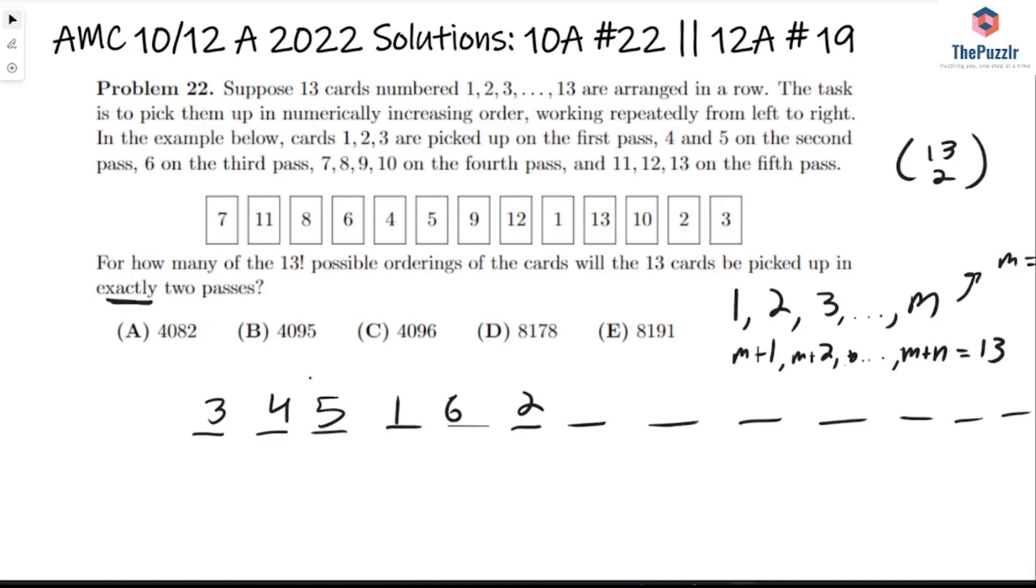So does that mean that for M equals 2 there's just 13 choose 2 ways to do it? Well, no. We have to remember it's exactly two passes. We also have to consider what if we do only one pass. So the way we would only do one pass is what if we picked 1 and 2 first? Then we would have 3, 4, 5, 6 and so on. So that's the case that's not allowed because this would be in one pass, right? After we picked the 1 and the 2 we would also pick the 3, 4 and all the way to 13. So we have to subtract that case.